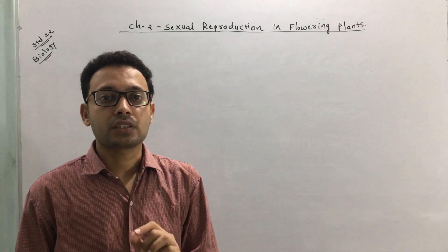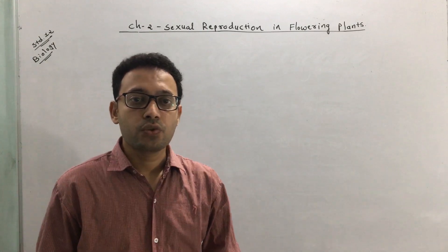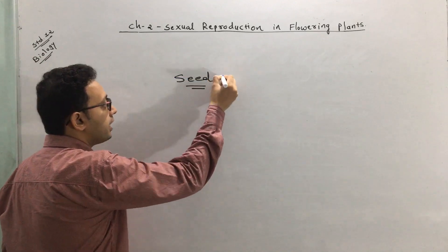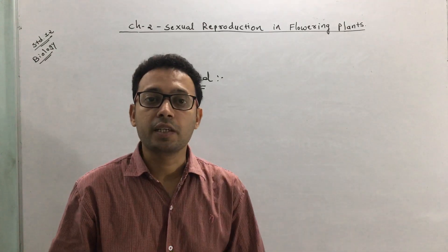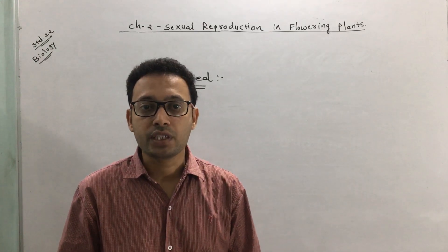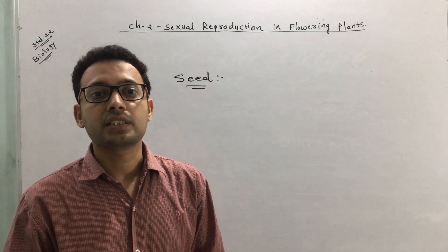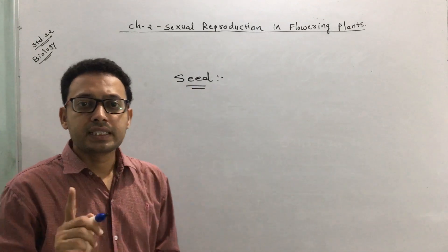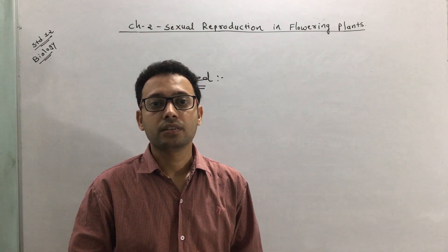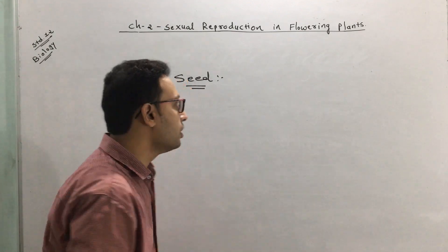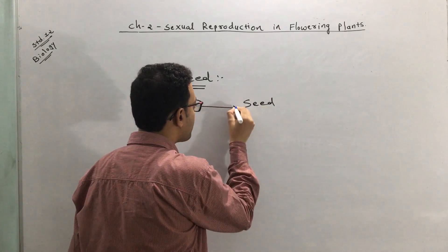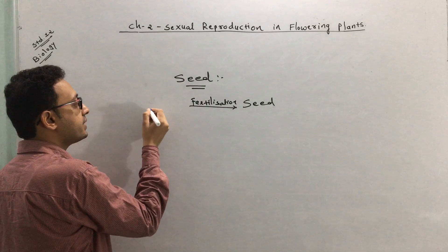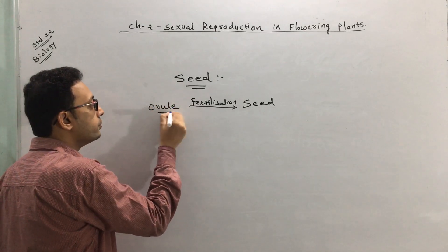Today we will see how the seed is going to be formed, what are the components present in the seed, and what is the importance of the seed. So we start with the seed. The seed is the result of fertilization — after fertilization, the seed is produced. The seed is produced by the process of fertilization of the ovule, which leads to the production of a seed.